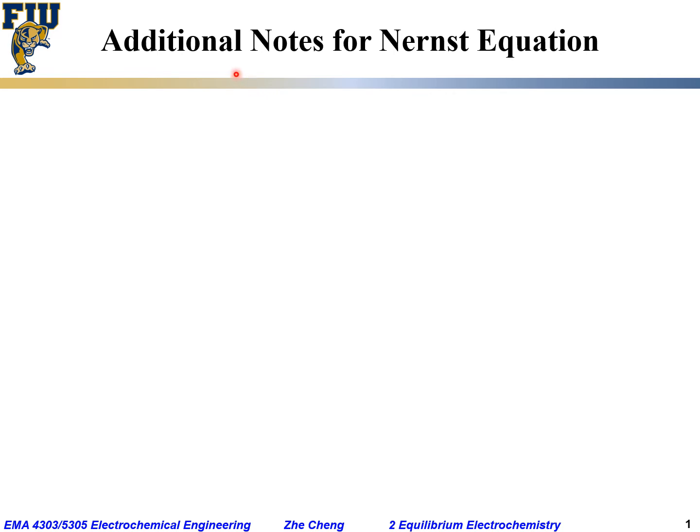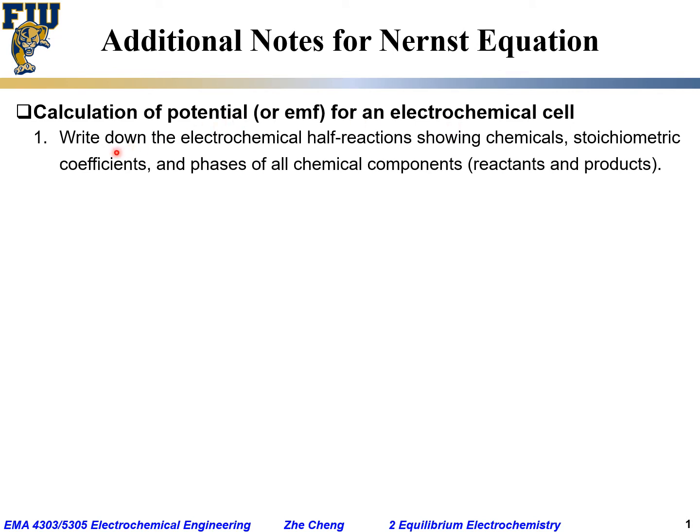A few additional notes about Nernst equation. In order to calculate equilibrium potential for an electrochemical cell, we need to write down the half cell reactions showing the chemicals